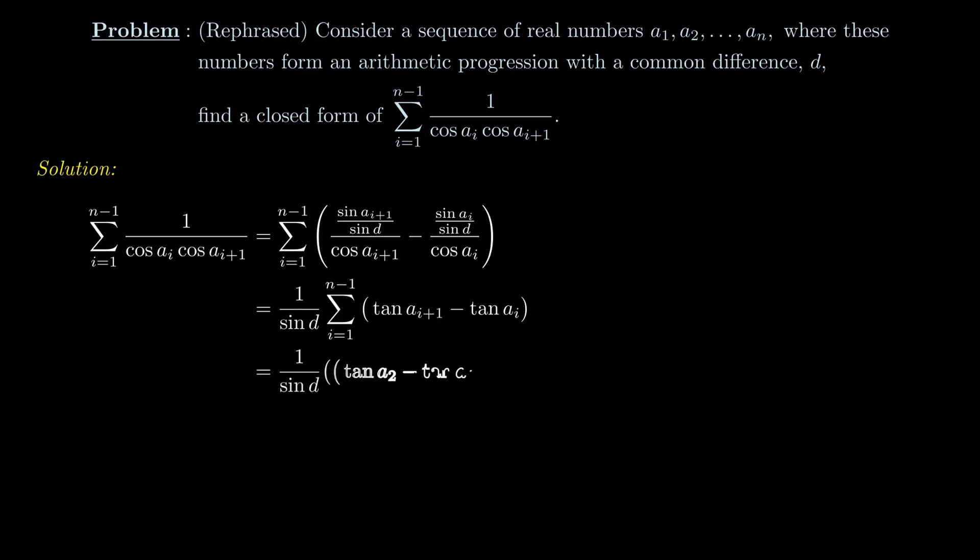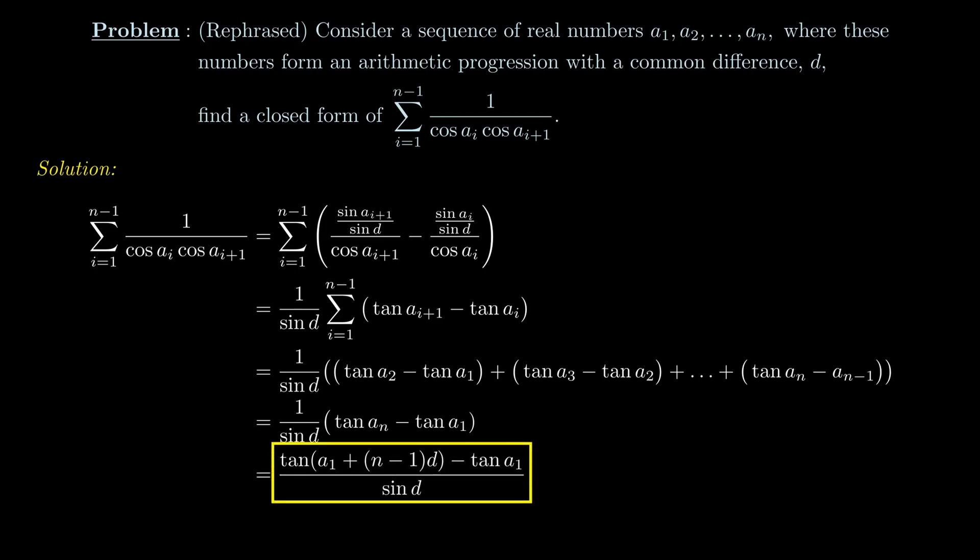We know that when we write out all the terms, many terms will cancel off and eventually we are just left with 1 over sine d times (tangent aₙ minus tangent a₁), which is the same thing as tangent of (a₁ + (n-1)d) minus tangent a₁ over sine d.